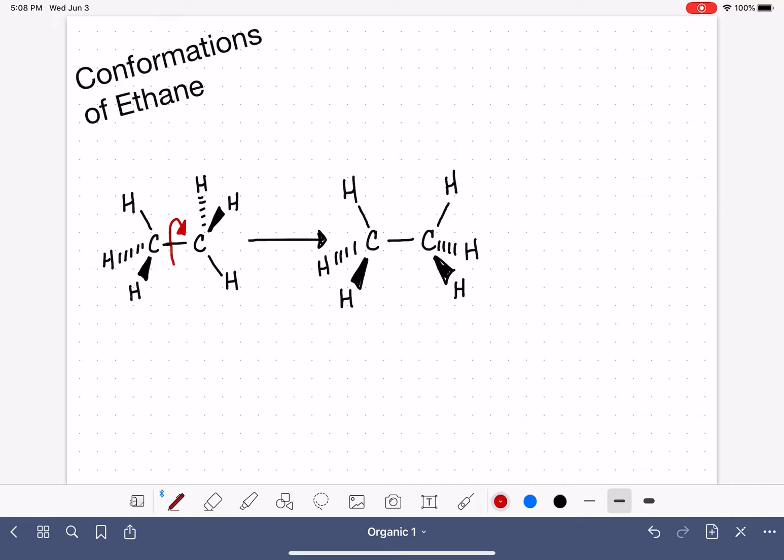Now what I want you to do is draw a Newman projection of this particular shape or conformation of the molecule. We're going to sight down this particular bond and draw what we see. This is our front carbon, and our front carbon looks the same as it did in the last drawings. We have a hydrogen sticking up, and we have two hydrogens sticking down, one to the left, one to the right.